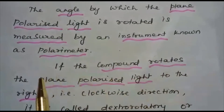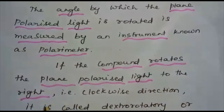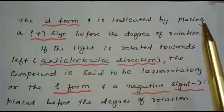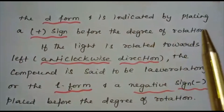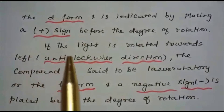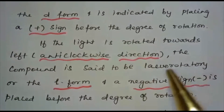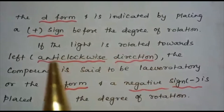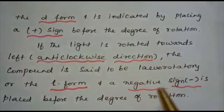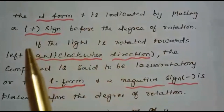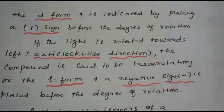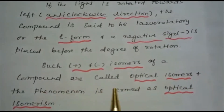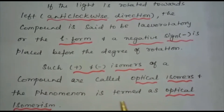If the compound rotates the plane polarized light to the right, that is the clockwise direction, it is called dextrorotatory — the D form — and is indicated by placing a positive sign before the degree of rotation. If the light is rotated towards the left, that is in the anticlockwise direction, the compound is said to be levorotatory — the L form — and a negative sign is placed before the degree of rotation. Such plus and minus isomers of a compound are called optical isomers and the phenomenon is called optical isomerism.